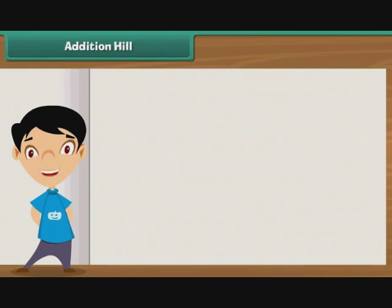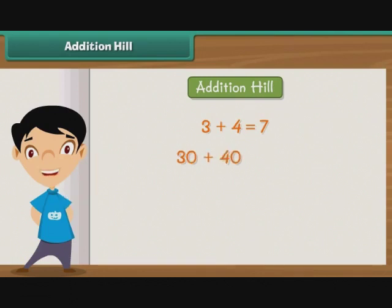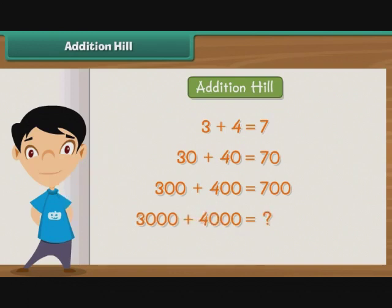There is a very interesting pattern in addition called Addition Hill. We know that 3 plus 4 is 7. What will be 30 plus 40? 30 plus 40 is equal to 70. What will be 300 plus 400? 300 plus 400 is equal to 700. Now you can tell the sum of 3,000 and 4,000 very easily. 3,000 plus 4,000 is equal to 7,000. As this pattern gives a hill-like structure, we call it the Addition Hill.